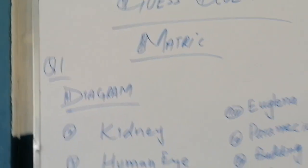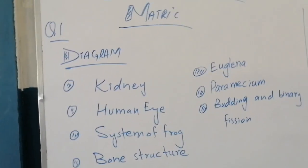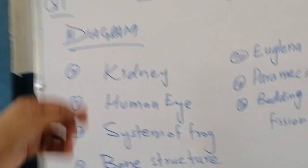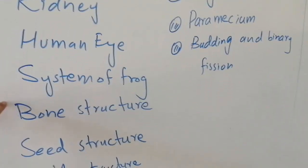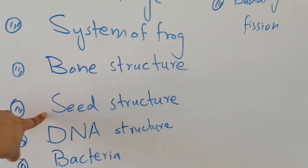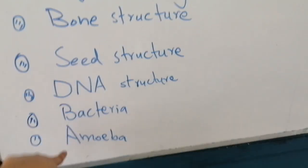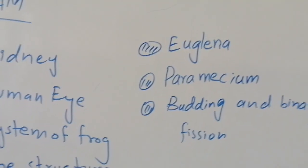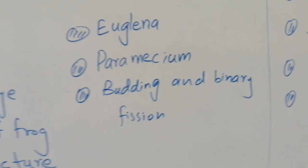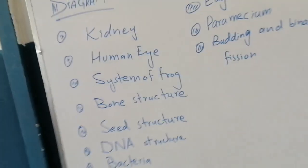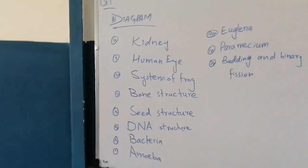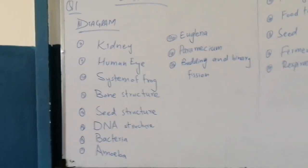In the diagram section, we can see some important diagrams which can come: kidney related diagrams, human eye, system of frog, bone structure, seed structure, DNA structure, bacteria, amoeba, euglena, paramecium, budding and binary fusions. These diagrams are mostly repeated in each group for practicals.